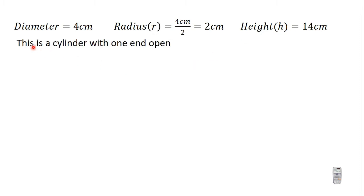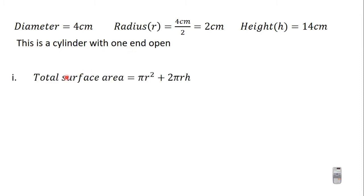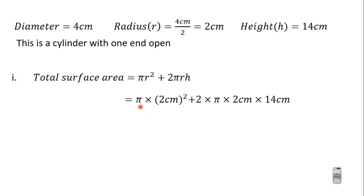The question says we should find the total surface area. This is a cylinder with one end open, so the total surface area is equal to πr² + 2πrh. We saw this formula in the previous video. We have the radius as 2 centimeters and the height as 14 centimeters.